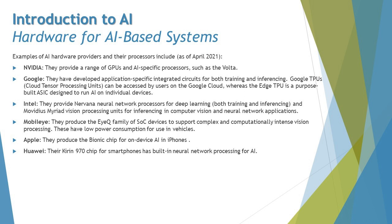Apple produces the Bionic chip for on-device AI in iPhones, supporting features like face recognition and Face ID — tracking changes in your face day to day to allow unlocking. Huawei's Kirin 970 chip for smartphones has built-in neural network processing for AI, offering good AI options that can be called narrow AI.